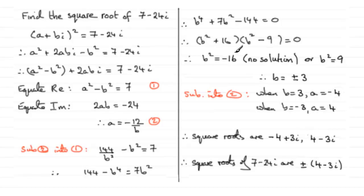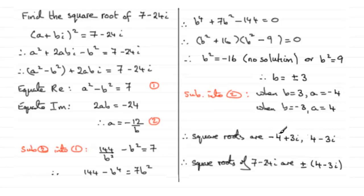Setting each factor equal to zero: b squared plus 16 equals 0 leads to b squared equals minus 16, which has no real solution since b must be real. The other factor gives b squared minus 9 equals 0, so b squared equals 9, meaning b equals plus or minus 3. Substituting back into equation 2 gives corresponding a values of minus 4 and 4. So the square roots of 7 minus 24i are minus 4 plus 3i and 4 minus 3i, written as plus or minus the quantity 4 minus 3i.